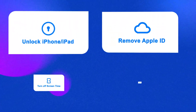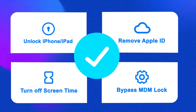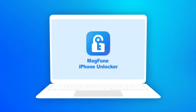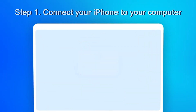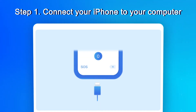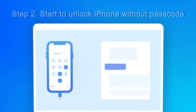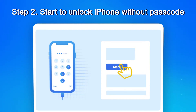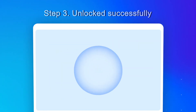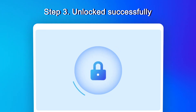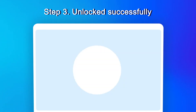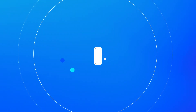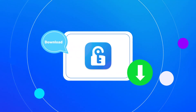It's pretty easy to use our product. Just follow the instructions of the software and do a few steps to help you solve the problem. Step 1: Connect your iPhone to your computer. Step 2: Start to unlock iPhone without passcode. Step 3: Unlock successfully. Magphone iPhone Unlocker is one of the best unlocking tools to solve the problem for you quickly.